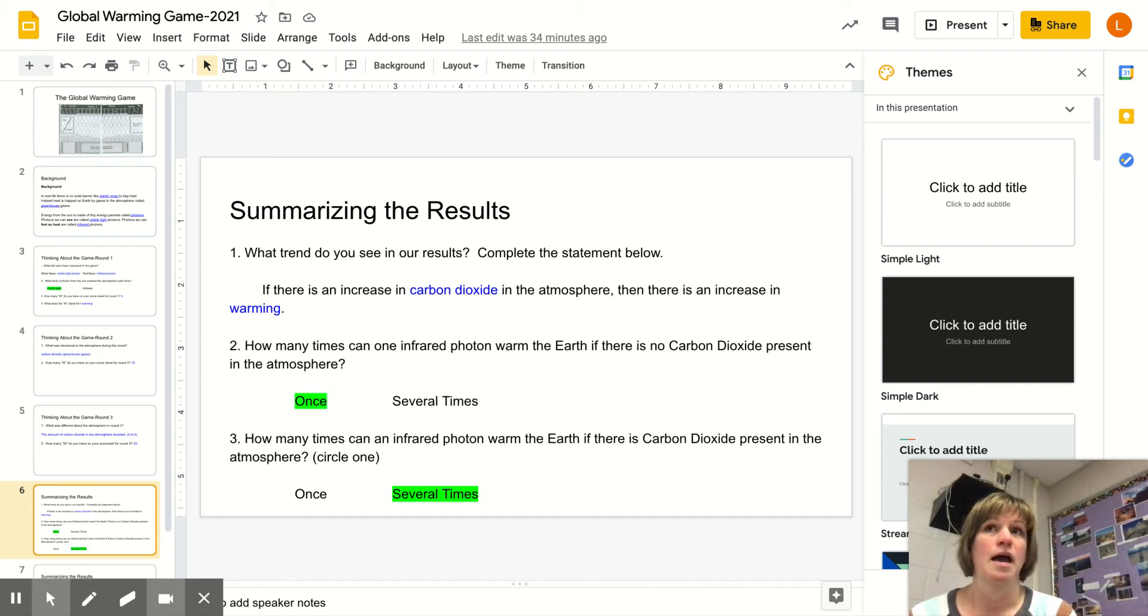But do you remember how I had a turn in round three that was super annoying? I could not get out. I had my visible light photon. I went to her surface because I could go through the carbon dioxide when it was visible light. But then I was absorbed by something and hit a carbon dioxide molecule with an infrared. Then I went back down, came back up, and hit another and another. I had six or seven Ws just on one turn.